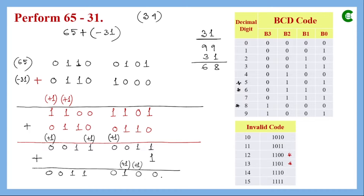This gives us the final result of the BCD subtraction between 65 and 31. To verify: 0100 equals 4 in decimal, and 0011 equals 3, giving a final decimal result of 34 — which matches our expected answer. This confirms the BCD subtraction is correct.